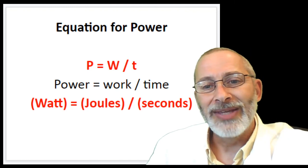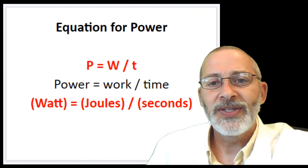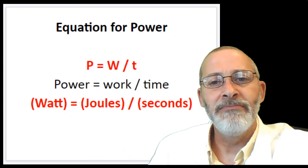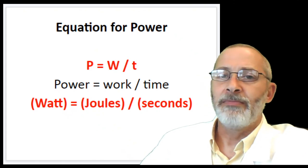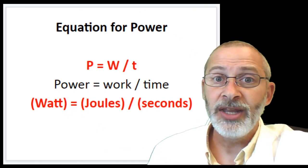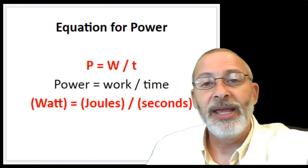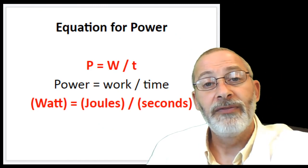So, a watt is a joule per second. Power is a measure of the amount of work that is done divided by a given period of time.